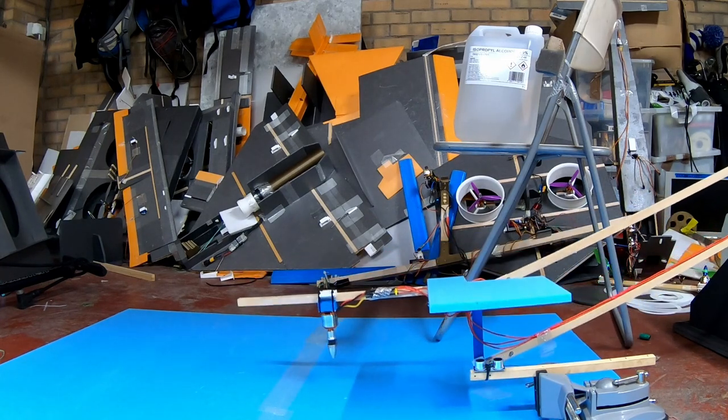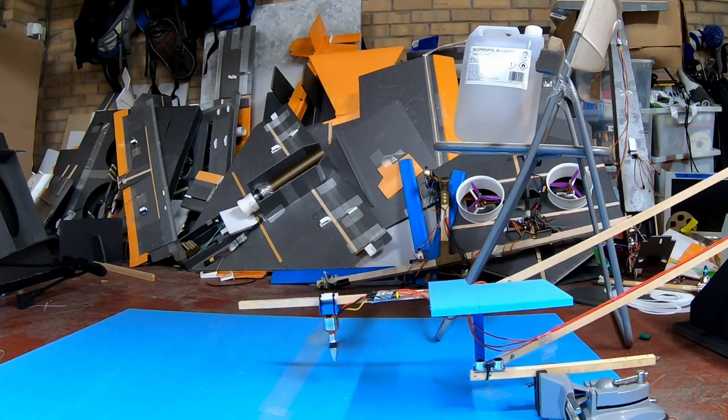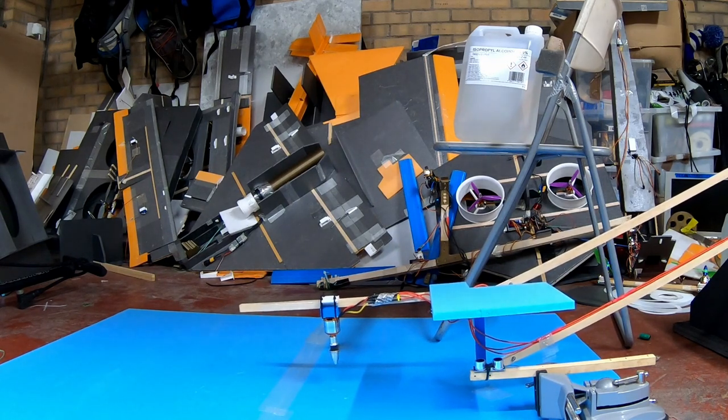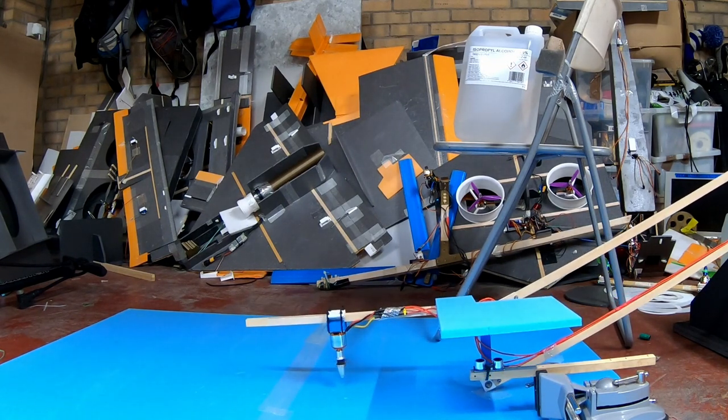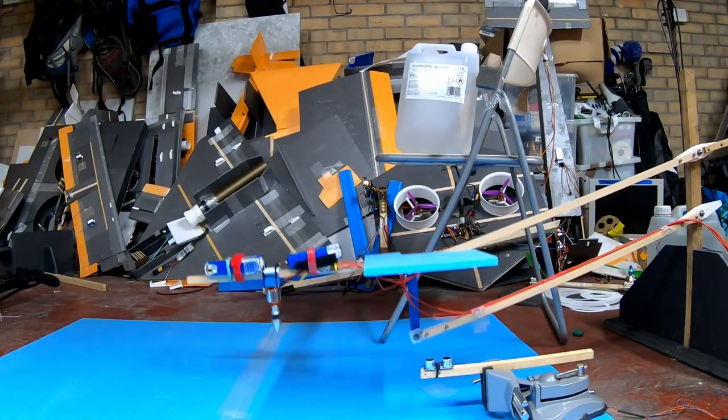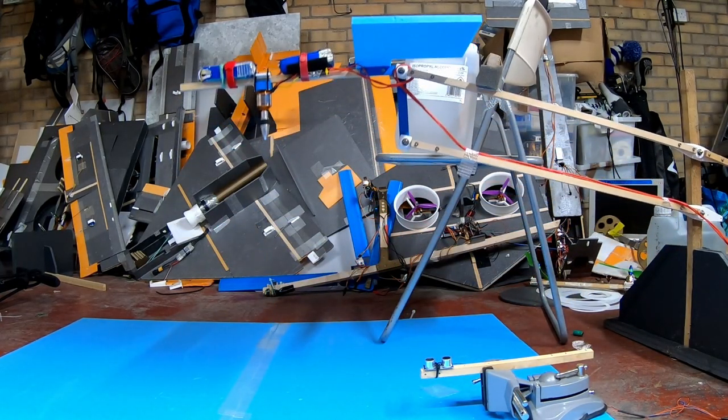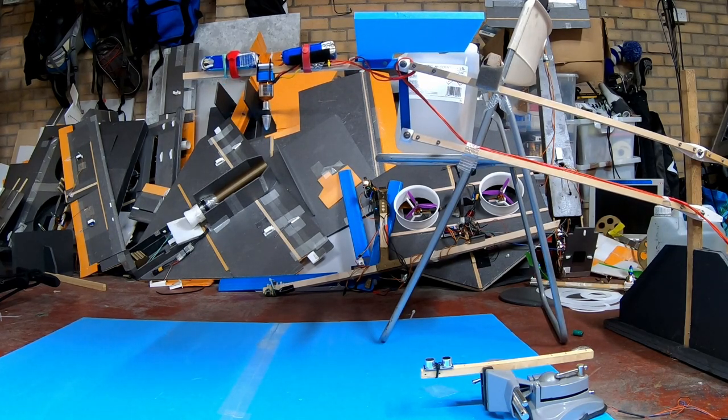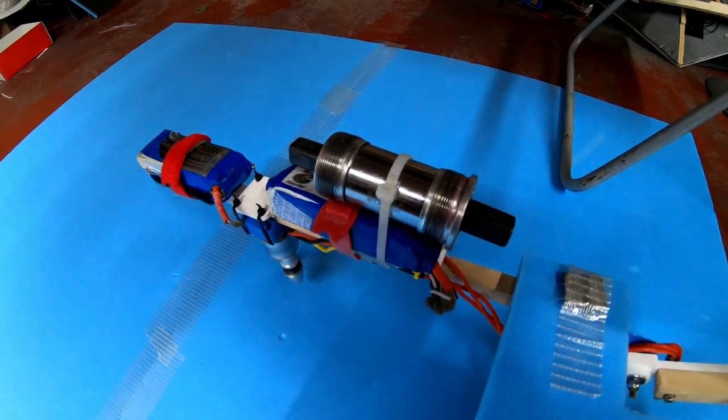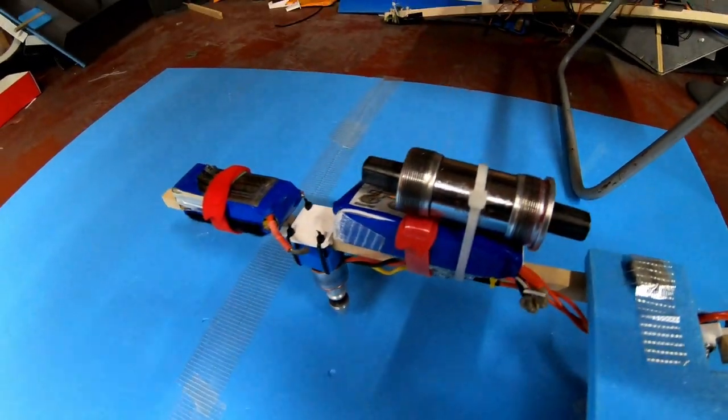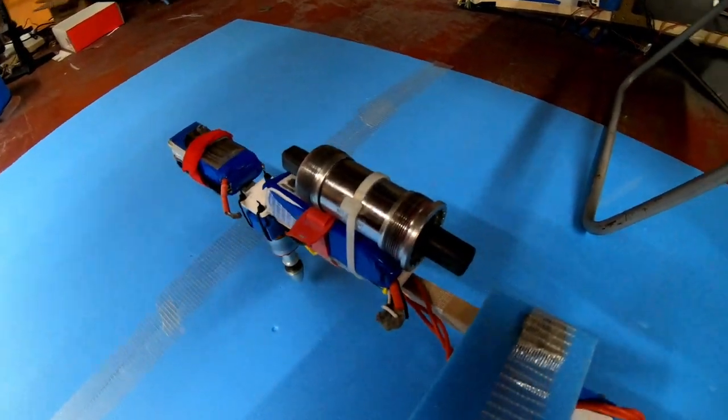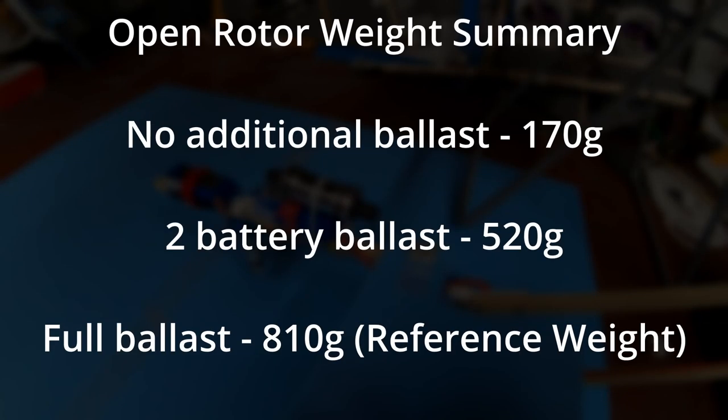I ran three tests on the open rotor. The first was just the rotor on that stand, and the weight was 170 grams. If I add the two battery ballast, it brings it up to about 520 grams. After rooting around the garage, this bottom bracket brings the weight to 810 grams, which is practically the same as the test hovercraft. That's always my reference weight.